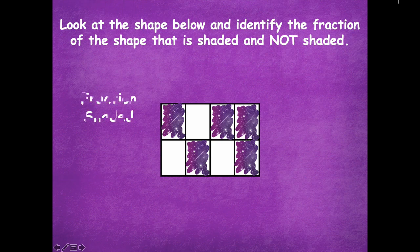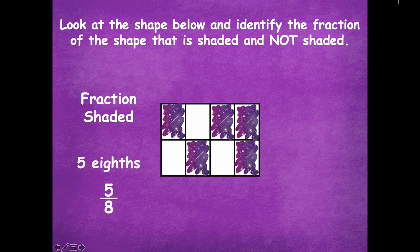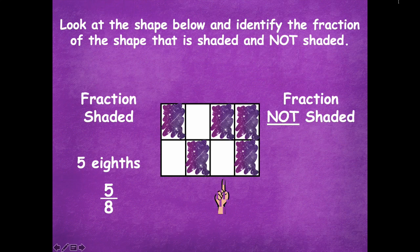The fraction part that is shaded is 1/8, 2/8, 3/8, 4/8, and 5/8. The part that is not shaded is 1/8, 2/8, and 3/8. Here's how you would write those in the different forms.